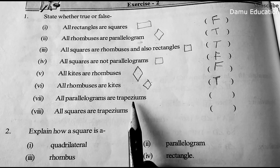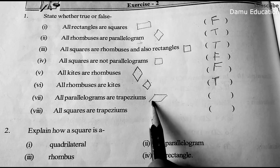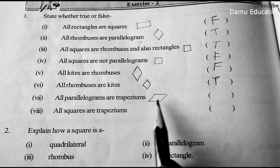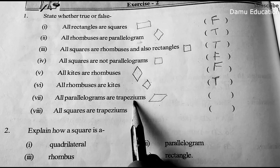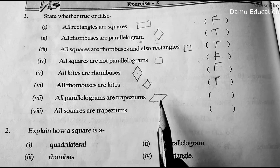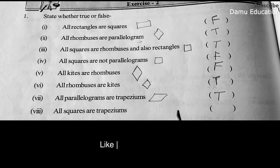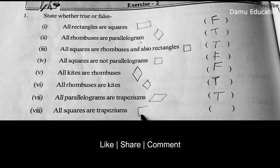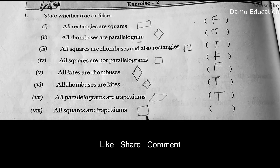All parallelograms are trapeziums. In a trapezium, at least one pair of opposite sides must be parallel. For a parallelogram this condition is satisfied, so this is true. All squares are trapeziums — since any one pair of opposite sides is parallel, this is also true.